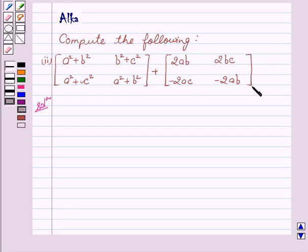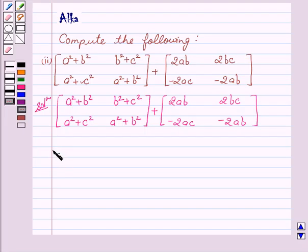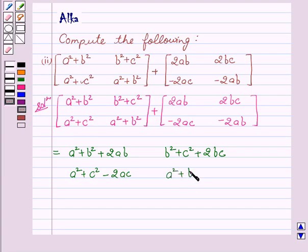Now let's start with the solution. On adding these two matrices, we get A square plus B square plus 2AB, then B square plus C square plus 2BC, A square plus C square minus 2AC, A square plus B square minus 2AB.